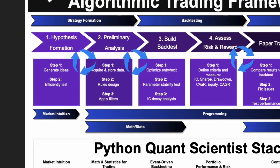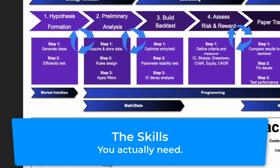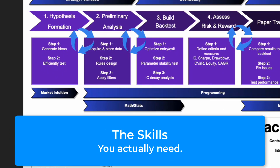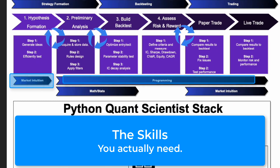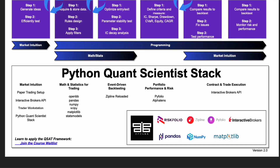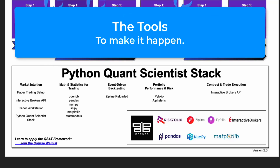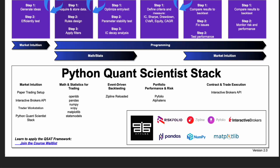We talk about the details of the steps and which skills a quant scientist actually needs to employ for each of these steps. They really come down to having market intuition, having some level of programming experience, and we will talk a lot about the Python tools, and then having some math and stats background. You'll see there's only a few areas where that comes in super handy. And then of course, we get into the Python Quant Scientist stack, which is the tools that we will go through in detail.